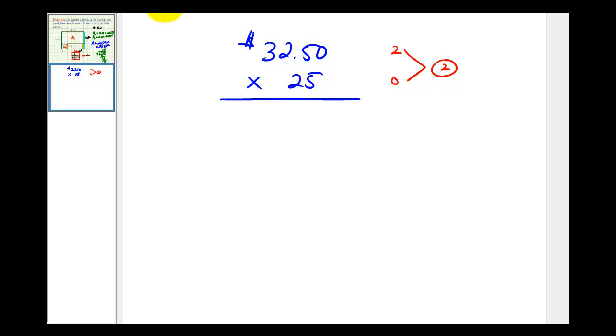So, now we'll go ahead and multiply by 5. We'd have 0, 25, carry the 2, 5 times 2 plus 2, that's 12, carry a 1, 5 times 3 plus 1, that would be 16. Now, multiply by 2, but we need to make sure that the first digit goes in this column here. So, if 2 times 0 would be 0, 2 times 5 is 10, carry a 1, 2 times 2 plus 1, that's 5, and 2 times 3 would be 6.